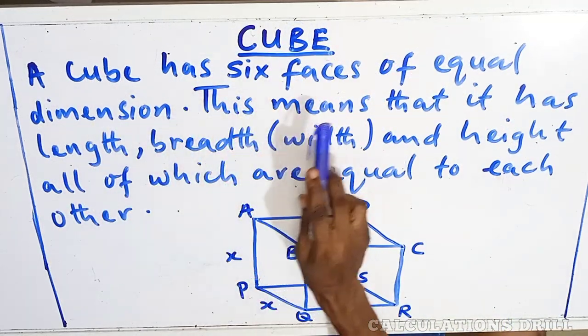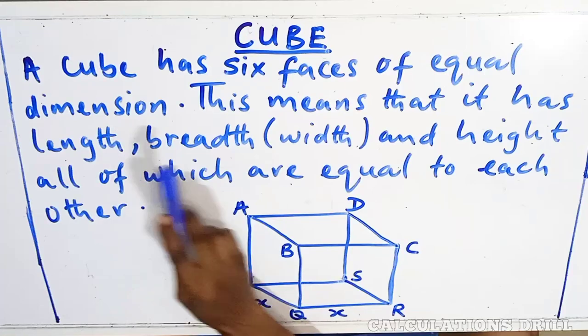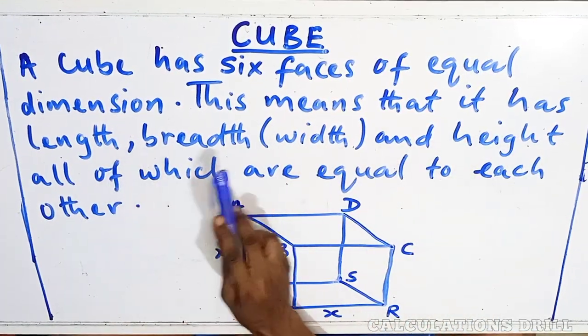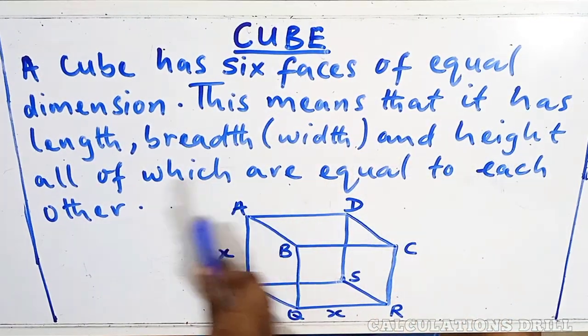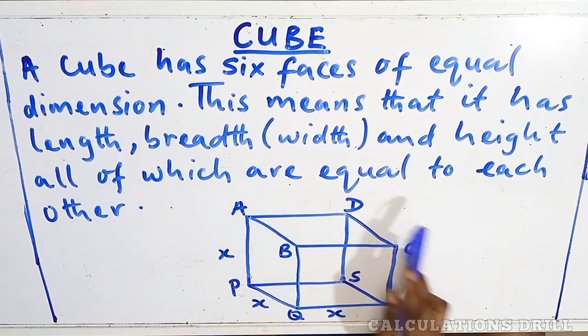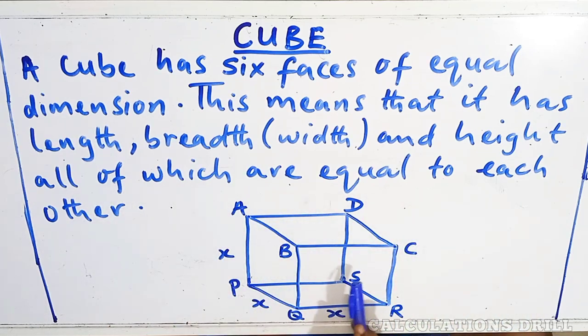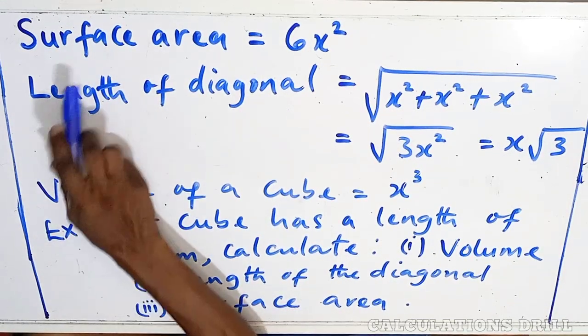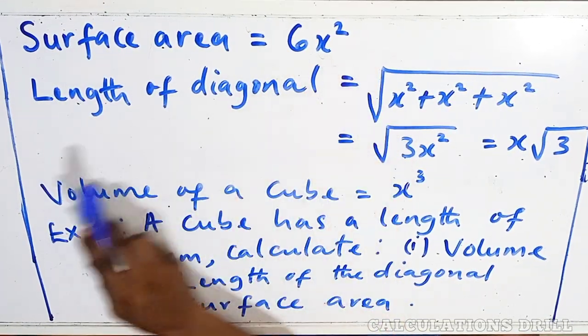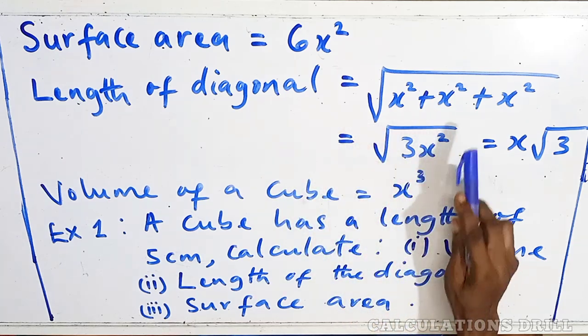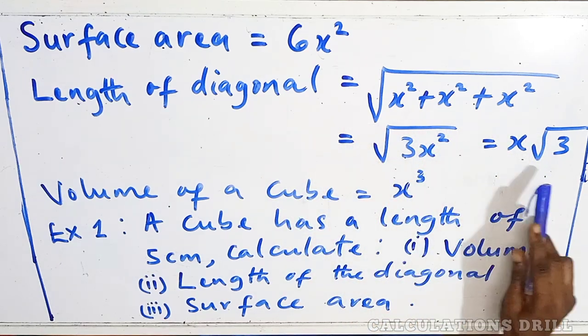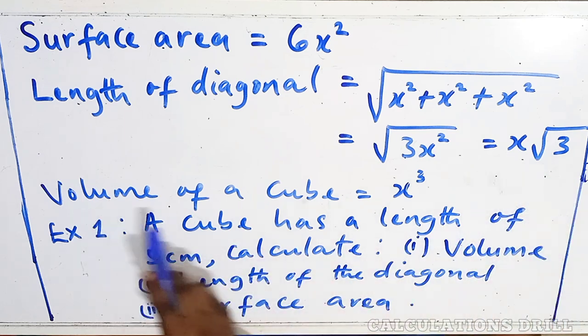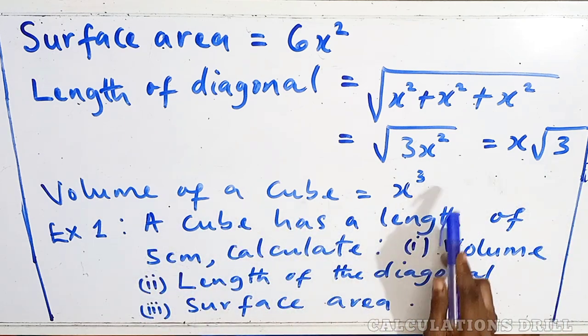A cube has six faces of equal dimension. This means that it has length, breadth, and height, all of which are equal to each other, as you can see in the diagram below. Now, the formulas we need to know are the surface area, the length of diagonal, and the volume of a cube, as shown below.